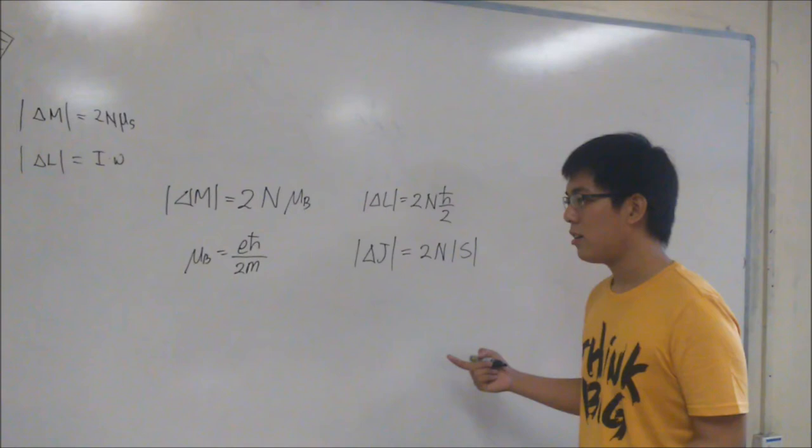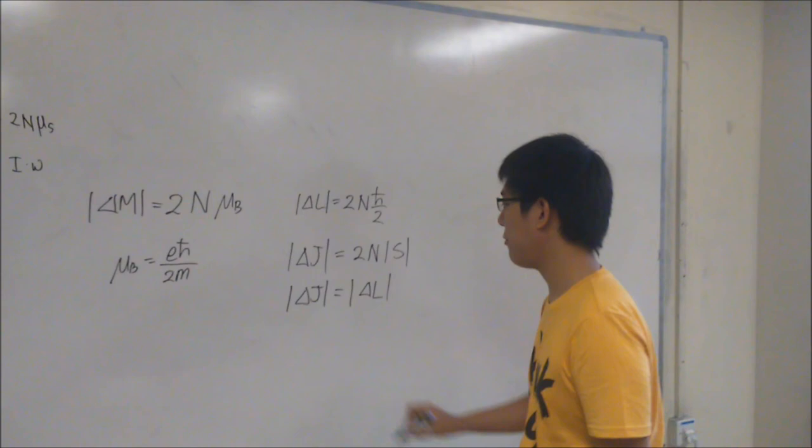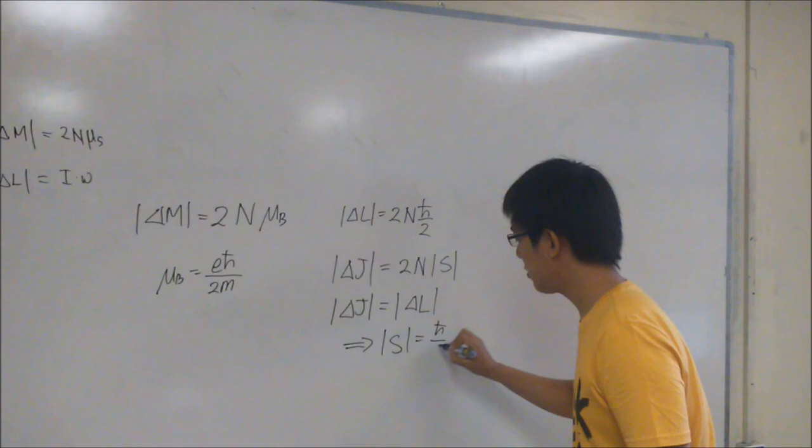Now, from conservation of angular momentum, we know that delta J, the magnitude of delta J is just the magnitude of delta L. And therefore, S is just h-bar divided by 2.